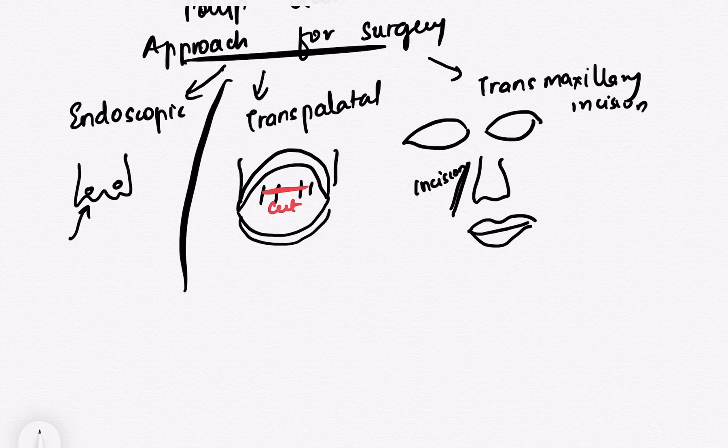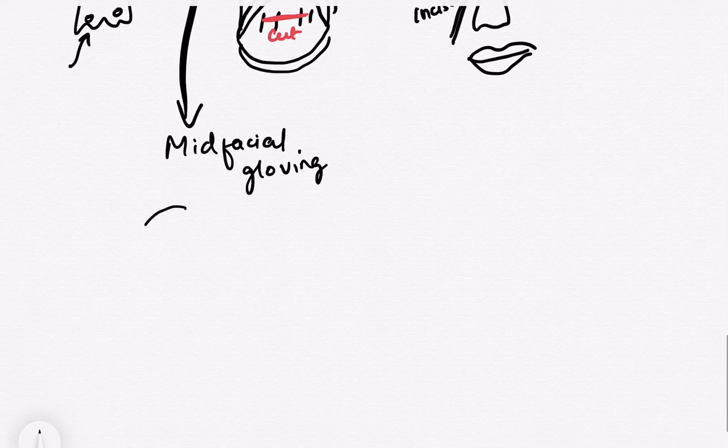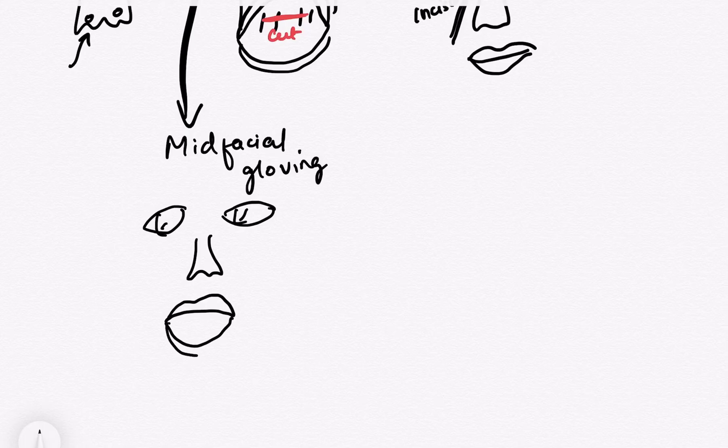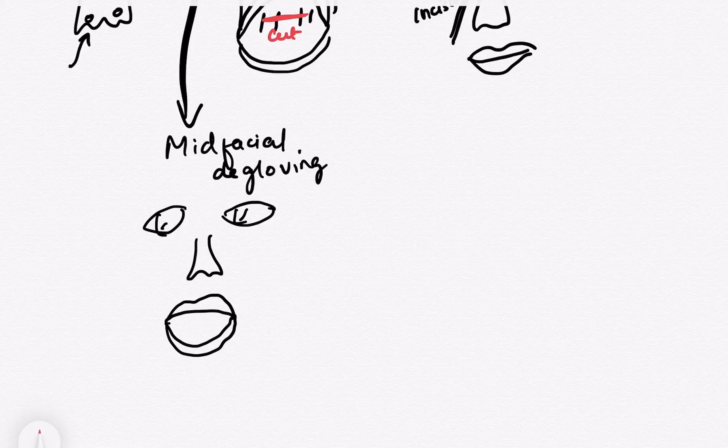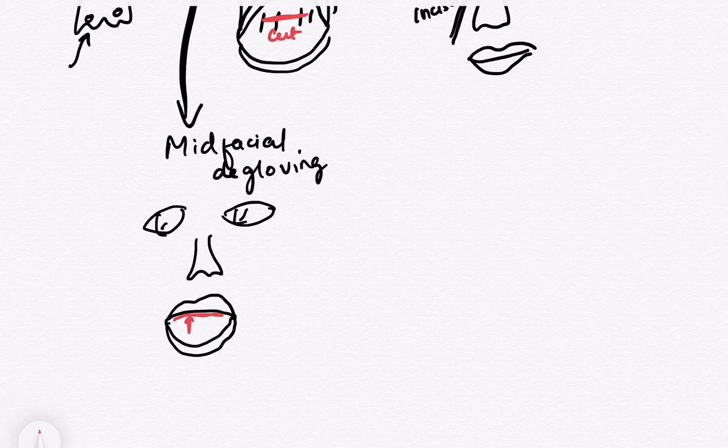Then the mid-facial degloving approach is, we prefer this mid-facial degloving approach in patients who do not want a facial scar. So basically what happens is, when you give an incision on the sides of the nose, there is a permanent scar on the face. So what we do is, just below the upper lips, we cut the mucosa from inside. So I hope you can imagine that I have raised the upper lip of the patient. Then you have the mucosa. Just above the teeth, I cut it. And when I go further upwards, you know I can reach maxillary sinus. And I can also reach the anterior nares that way.